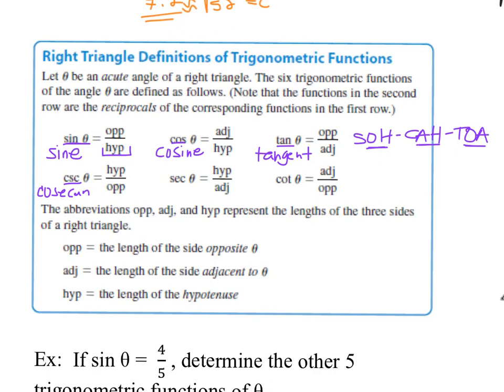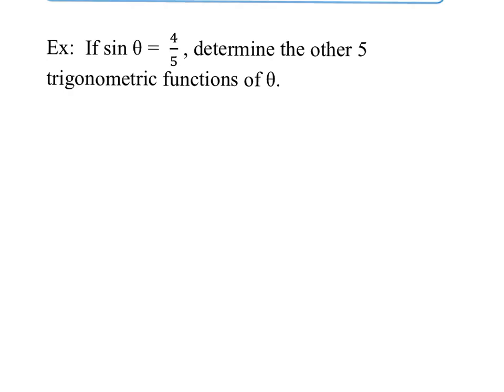These are the three most common definitions, but there are others as well. CSC stands for cosecant and it's the reciprocal of sine — hypotenuse divided by the length of the opposite side. SEC is called secant and it's the reciprocal of cosine — hypotenuse over the adjacent side. COT is cotangent, the reciprocal of tangent — adjacent over opposite. You can use all six of these definitions to compare two of three sides in any right triangle.